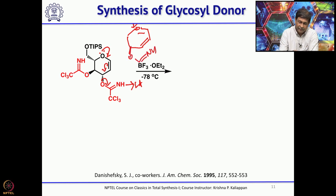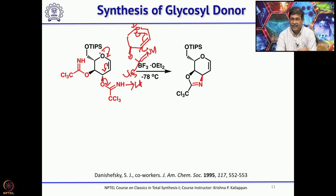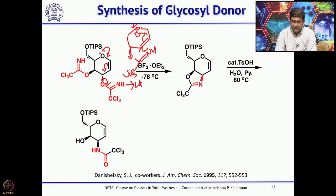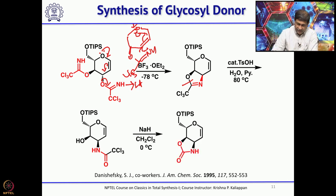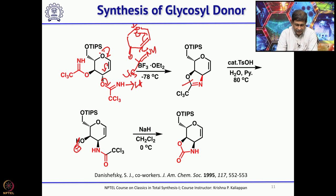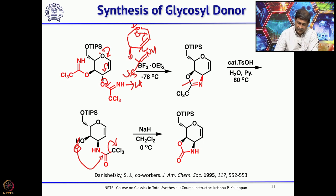The nitrogen neutralizes the positive charge on the oxygen, giving a 5-membered ring that also comes from the same beta side. Upon hydrolysis you get the hydroxyl group and the amide side. Then treating with base like sodium hydride forms an anion that intramolecularly attacks the carbonyl group, and CCl3 minus — a good leaving group — departs, leading to formation of the cyclic carbamate.